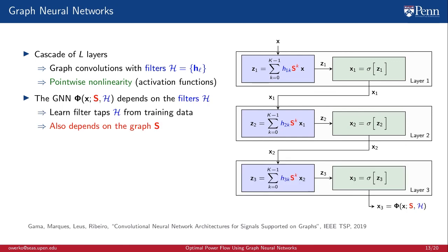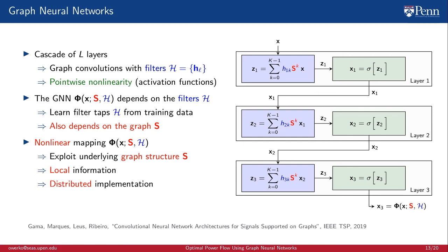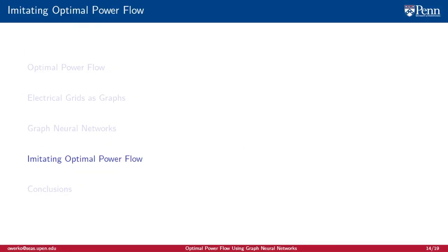The GNN depends on the filters H, which we learn from training data, but also depends on the graph structure S. In summary, a GNN is a nonlinear mapping that exploits the underlying graph structure S, it relies on local information only, and has a distributed implementation.